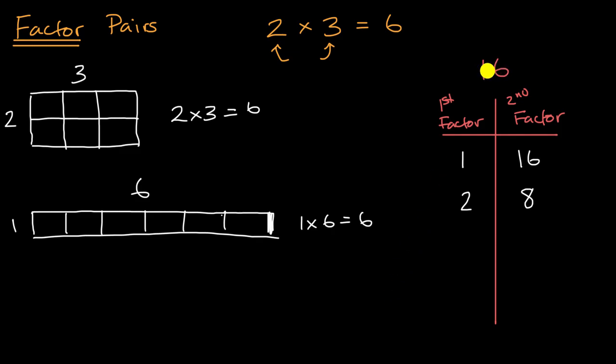Now what about three? Does three go evenly into 16? Well no, three times five is 15, and three times six is 18, so three doesn't go into 16, so three would not be a factor of 16. What about four? Well four times four is 16, so that's a factor pair there, four and four.